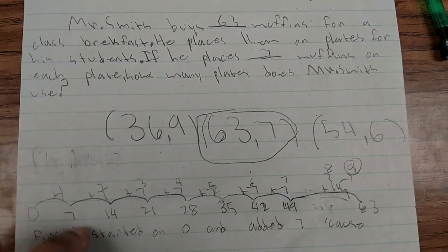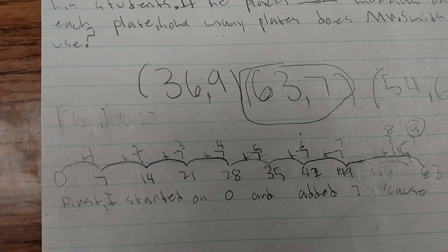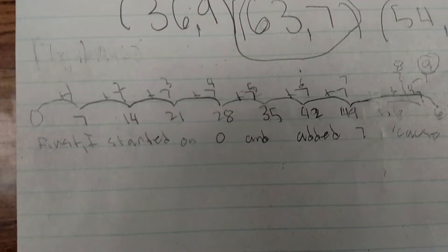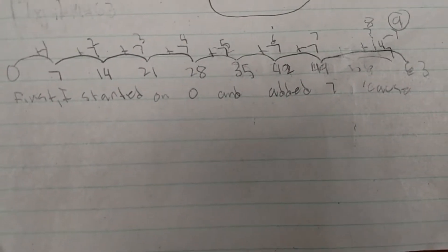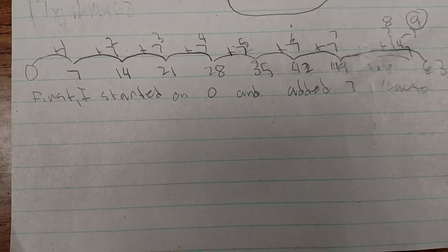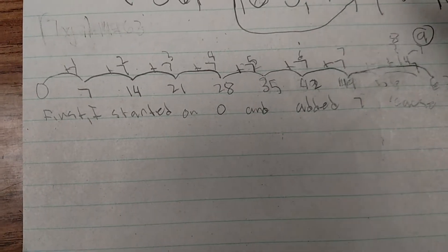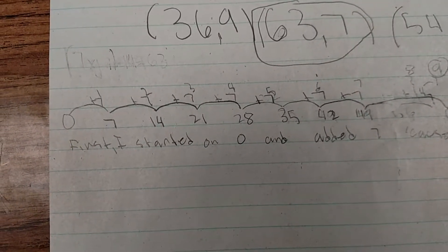Alright, so explain your number line. What did you do first? Well, first I started on 0 and I added 7. And I was going to keep doing that because it said that he places 7 muffins on each plate.